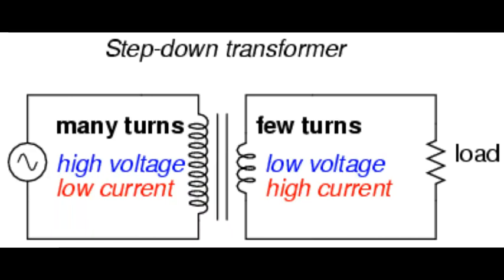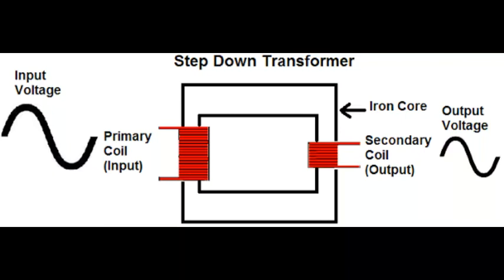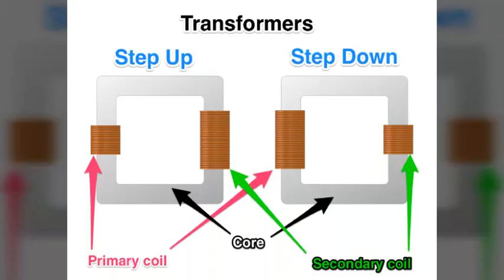Now the step-down transformer: the number of primary coils is maximum and the number of secondary coils is minimum. It works by converting high voltage to low voltage, always providing lower voltage at the output. As seen in the signal diagram, maximum input voltage gives minimum output voltage based on the number of coils.